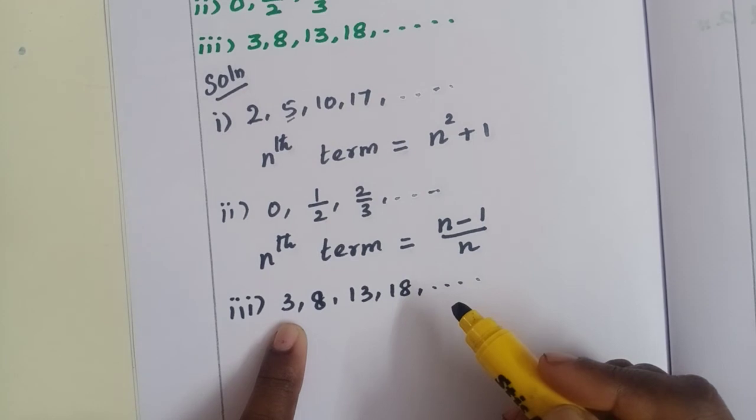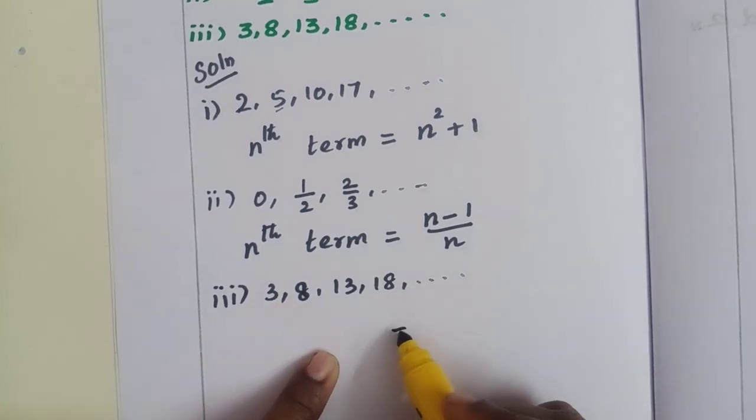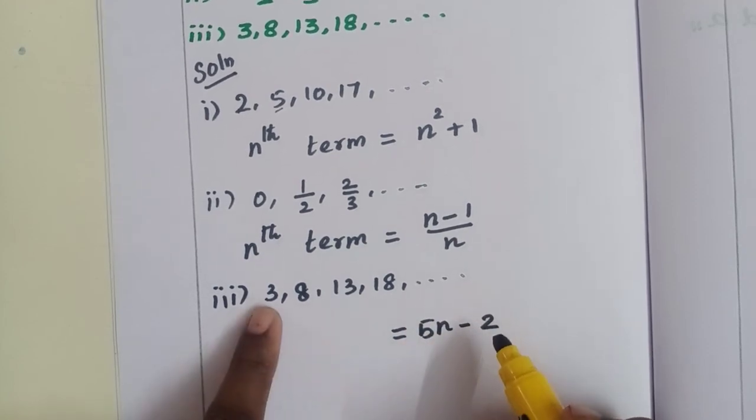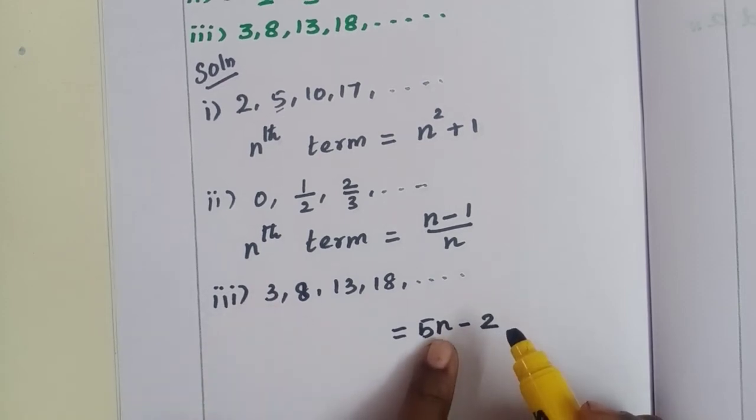So 3, 8, comparing these, it's 5n minus 2. When n value is 1, substitute: 5 times 1 is 5, minus 2 equals 3.